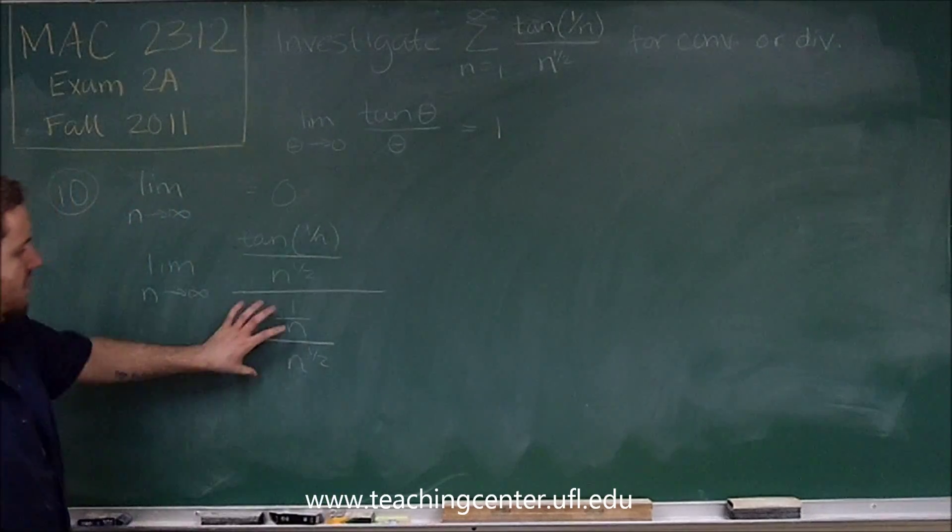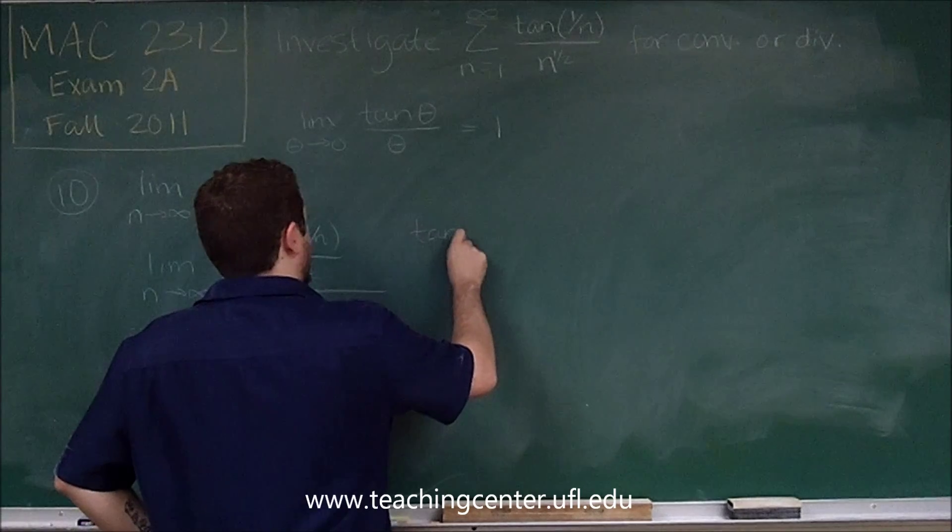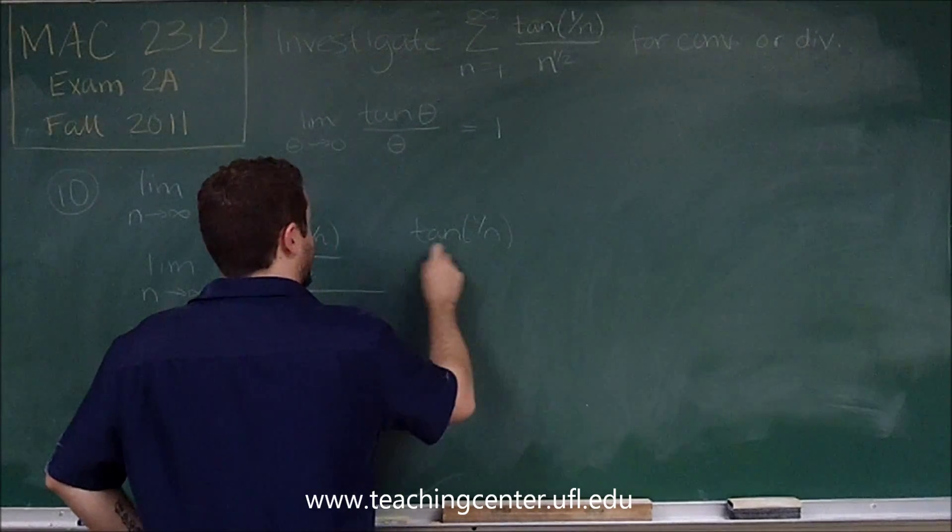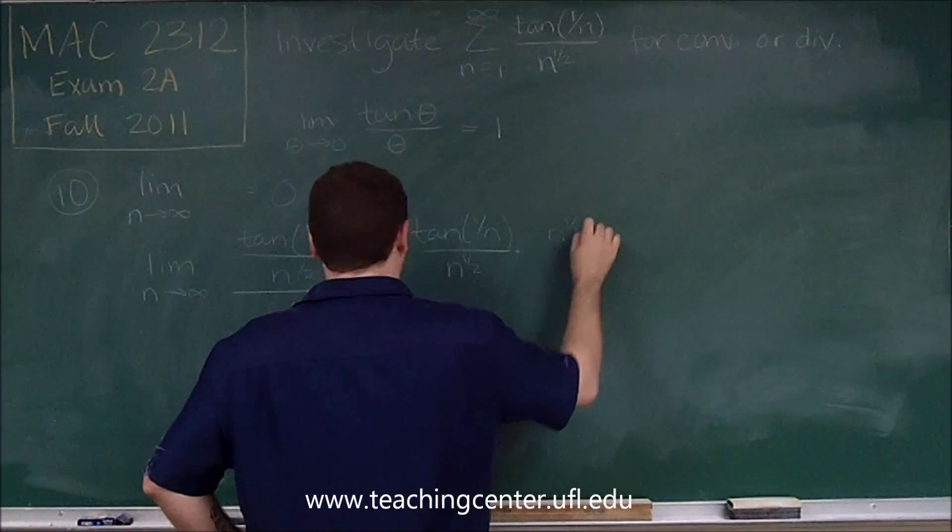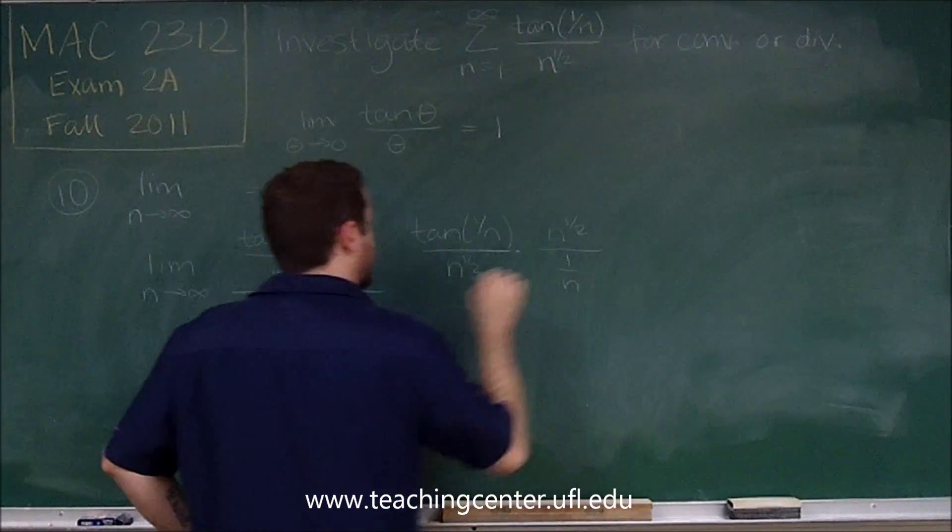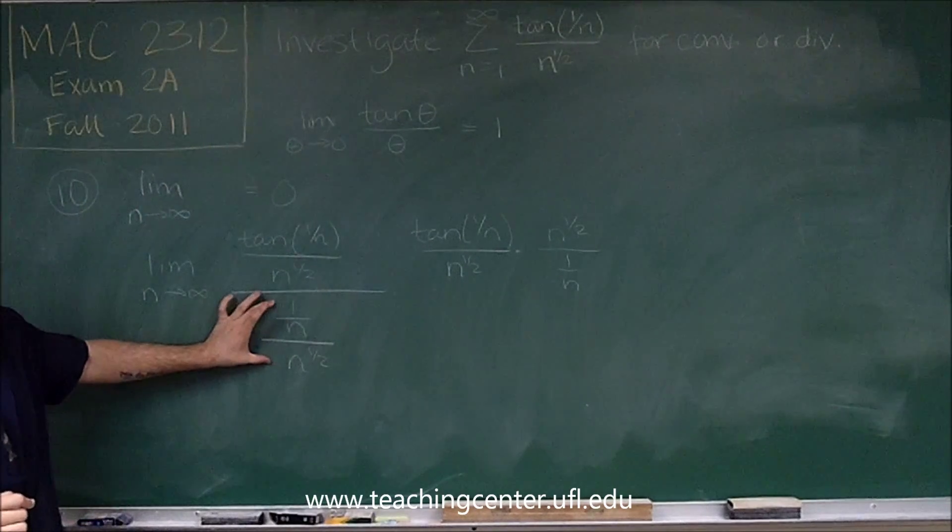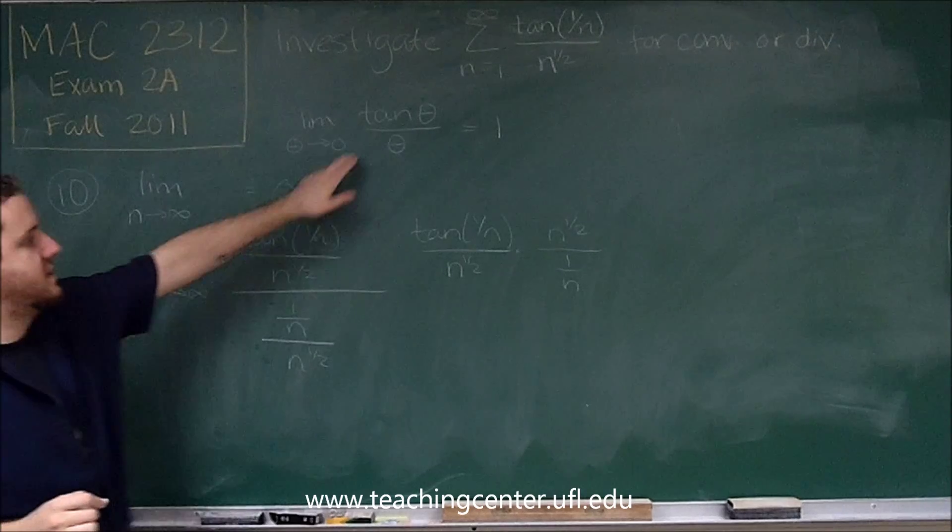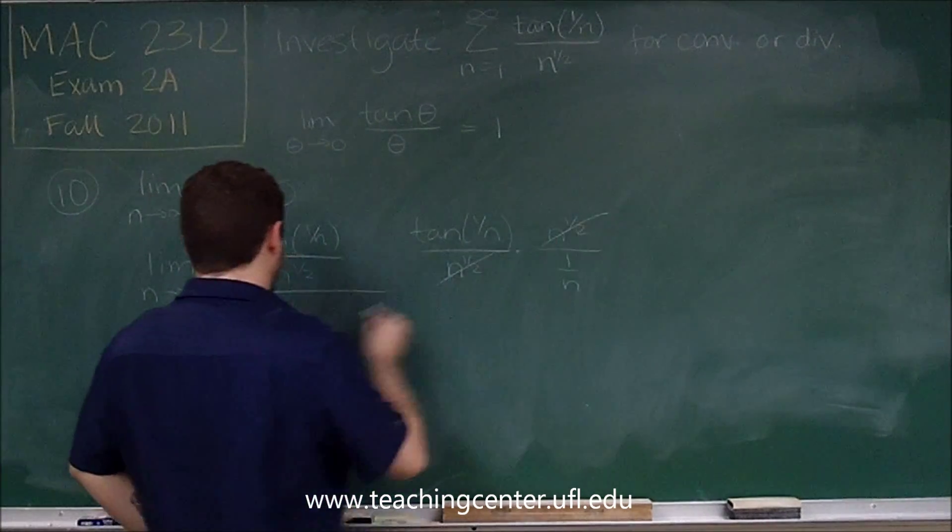So let me rearrange this to show you how this works. So if you want to multiply by the reciprocal of this instead, what we're going to get is tan 1 over n over n to the 1 half times n to the 1 half over 1 over n. If you don't mind, I specifically did not combine this one because I want to make this identity more clear.